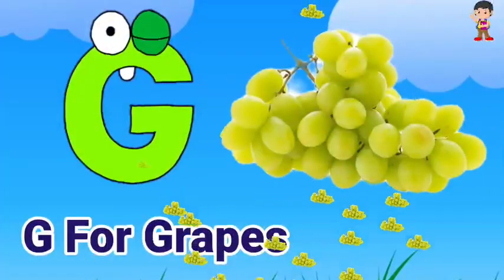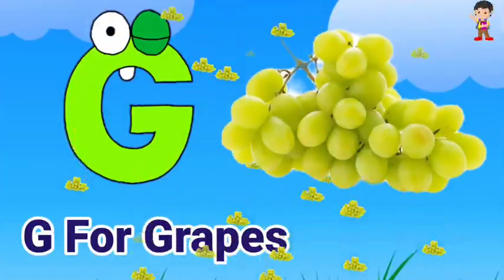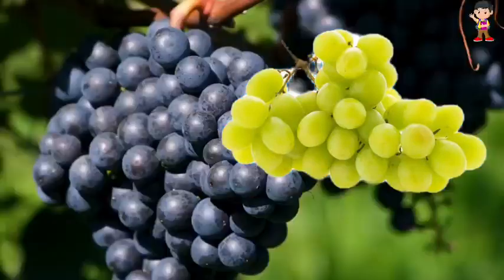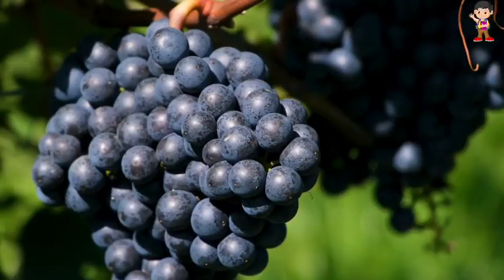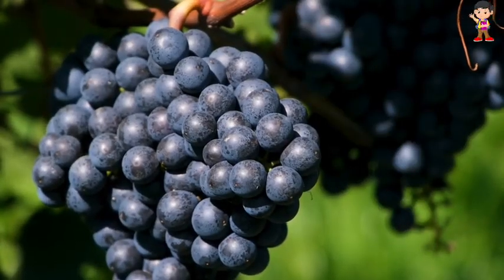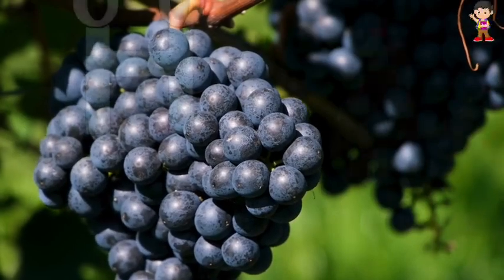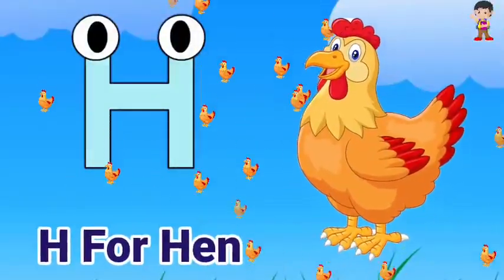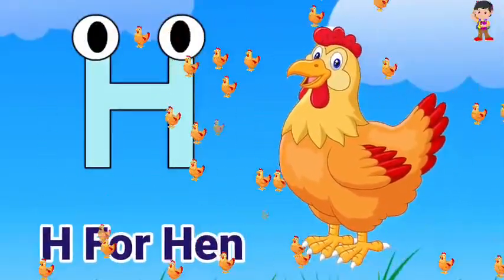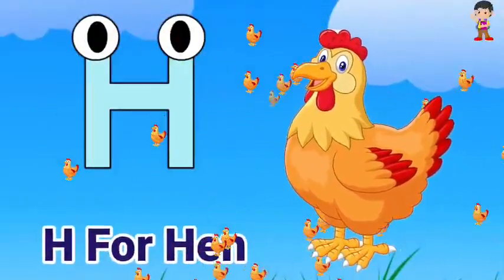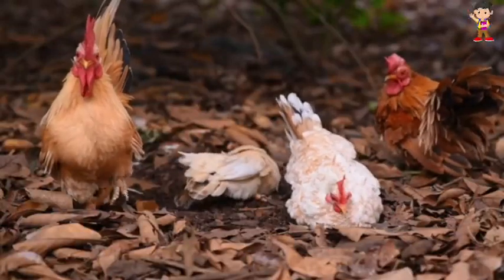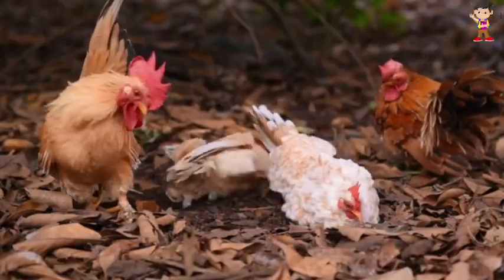G for grapes, grape means ongoor. H for hair, hair means murgi.